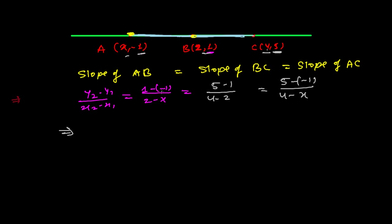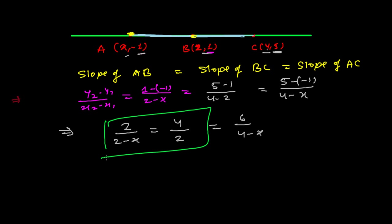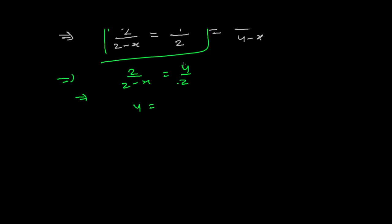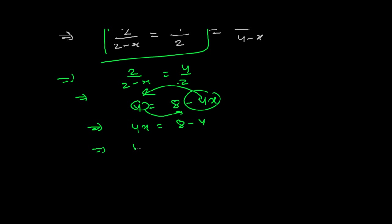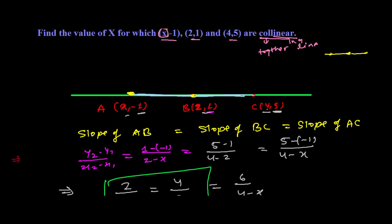Setting slope of AB equal to slope of BC: 2 / (2 - x) = 4 / 2. Cross-multiplying: 2 × 2 = 4 × (2 - x), so 4 = 8 - 4x. Rearranging: 4x = 8 - 4 = 4, therefore x = 4 / 4 = 1. The value of x is 1.